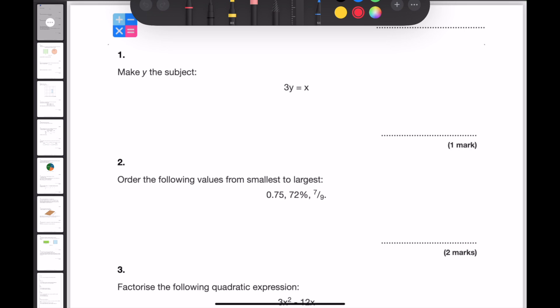Make y the subject. In order to make y the subject, we need to divide both sides by 3. This will isolate y by itself. And because I've got to do x divided by 3, and I can't divide x by 3, I'm going to leave it as a fraction. So there we have it. Y is now the subject.